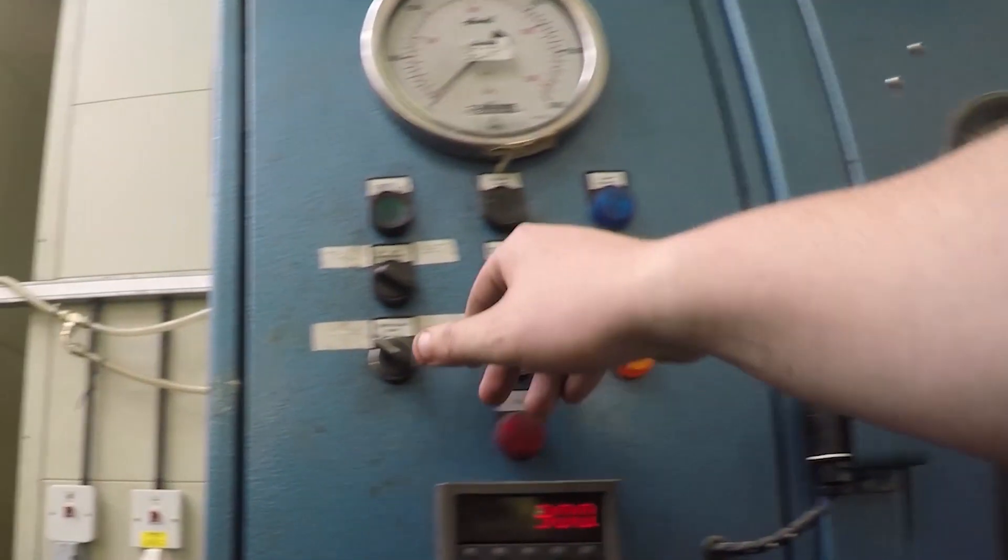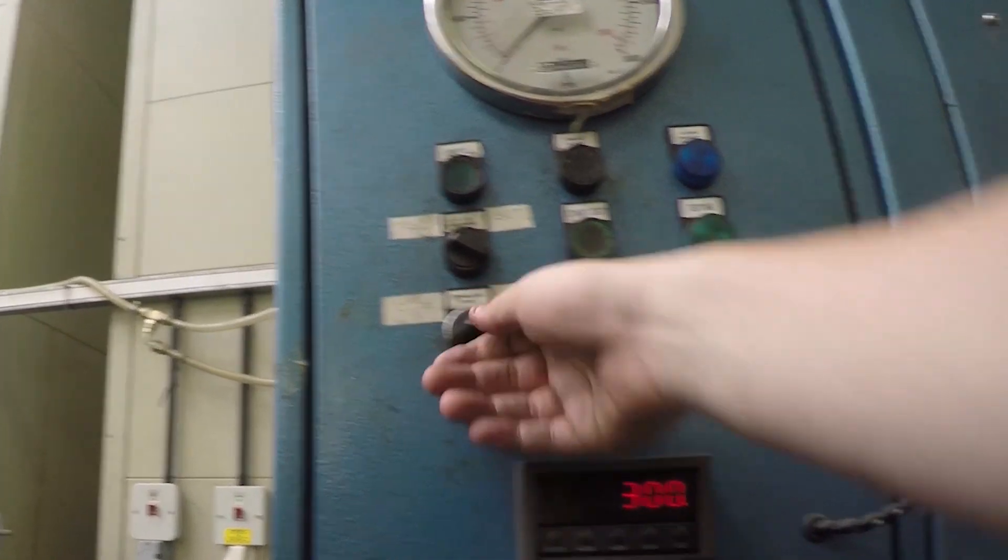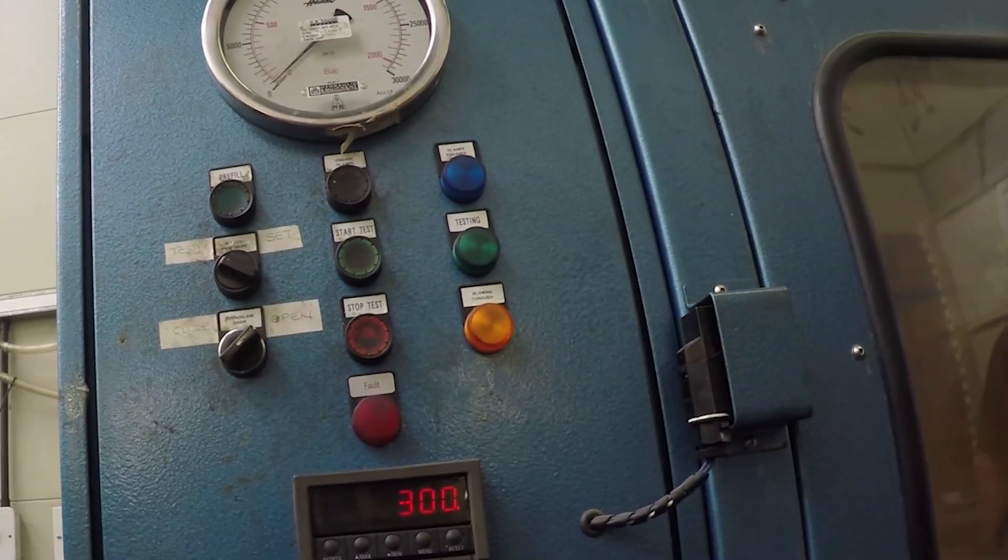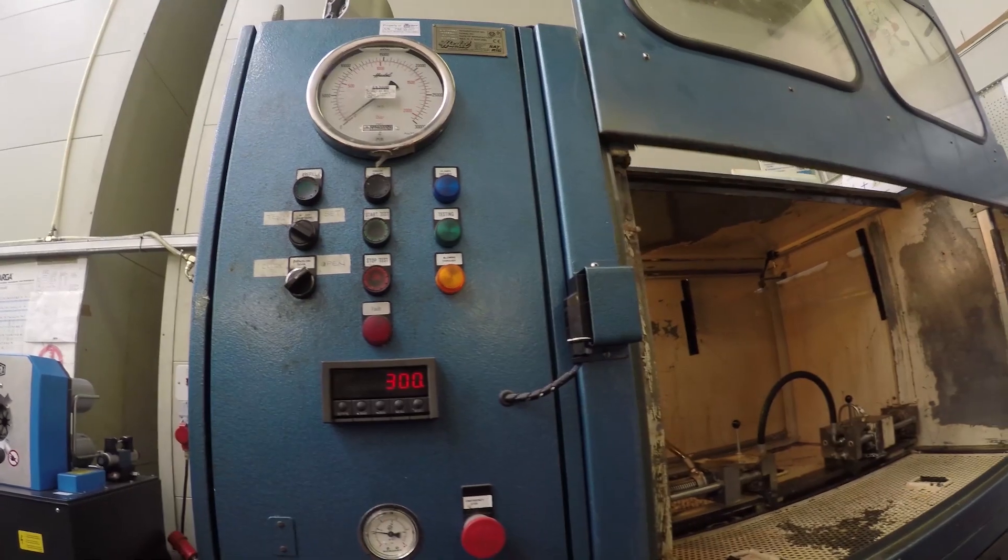Should this be the only hose that you are testing, click the dial back out and turn clockwise until it stops and click back into place. You can now open the door and remove the hose.